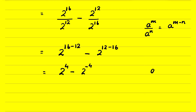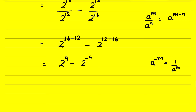A negative exponent means a raised to the power minus m equals 1 upon a raised to the power m — the multiplicative inverse of the base raised to the power of the exponent. So here, 2 raised to the power 4 minus 2 raised to the power minus 4 becomes 2 raised to the power 4 minus 1 upon 2 raised to the power 4.